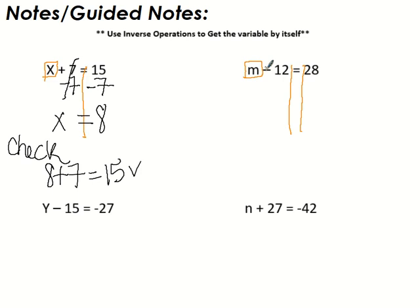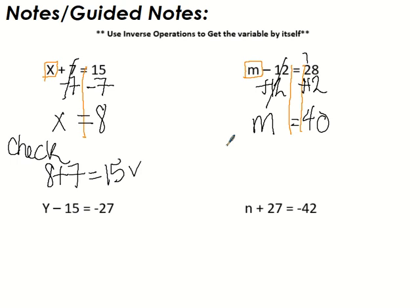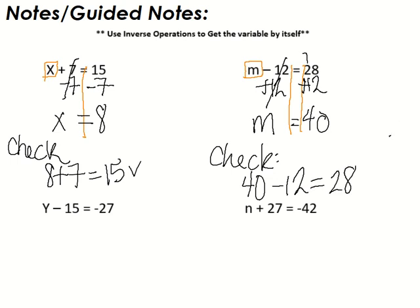Now we're subtracting 12, so the inverse would be to add 12. Minus 12 plus 12 cancel each other out, it becomes 0, and we're left with m by itself. Put the equal sign back here. Remember, everything we do to one side we have to do to the other side to keep the balance equal. So we add 28 plus 12 and we get 40. You can always check these by taking your answer and plugging it back in: is 40 take away 12 actually 28? Yes — 28. Check.